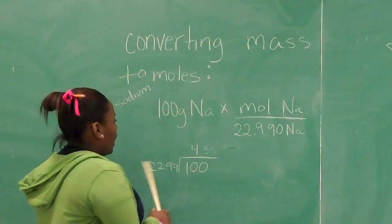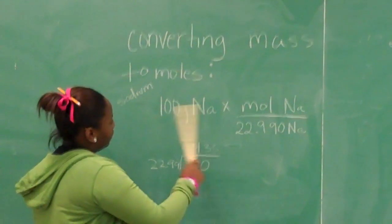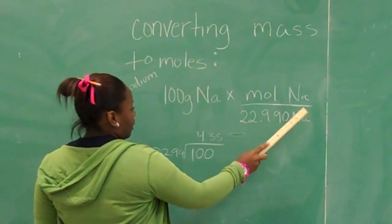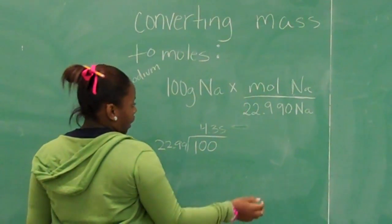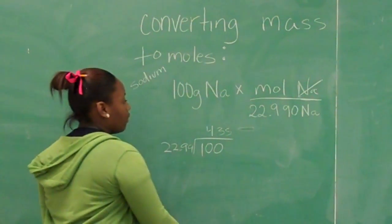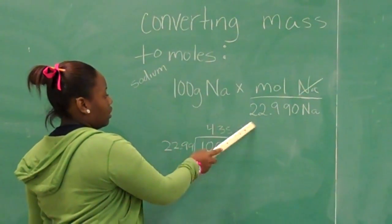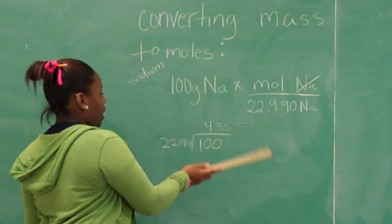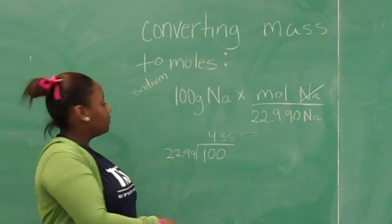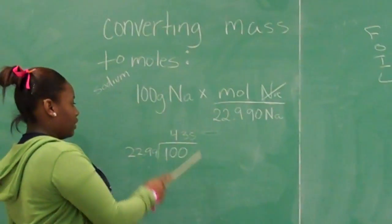We will be converting this equation into moles. But since you have NA here, NA here, and NA here, you don't need all three, so you're going to cross this one out. Since you only have these two numbers, you're going to divide 100 by 22.99 and your answer will be 4.35.